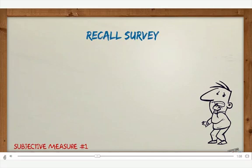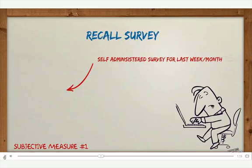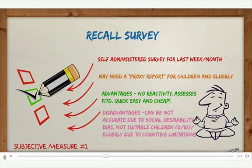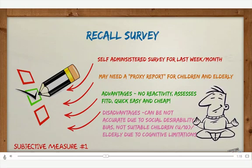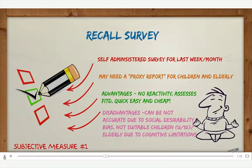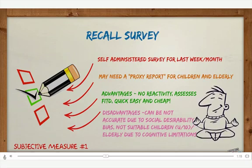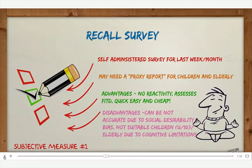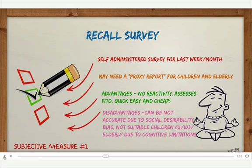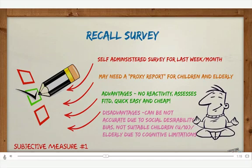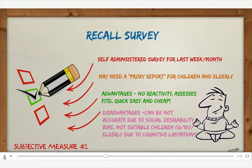A recall survey — subjective measure number one — can be a self-administered survey covering the last week or the last month. You write down everything you did in that period, so you're doing it all at the end rather than as you go. This poses a problem for children under 12 or the elderly, as they can't recall it themselves due to cognitive limitations. Advantages include no reactivity because you don't know you're being measured until you do the survey, and it assesses frequency, intensity, type, and duration. It's also quick, easy, and cheap.